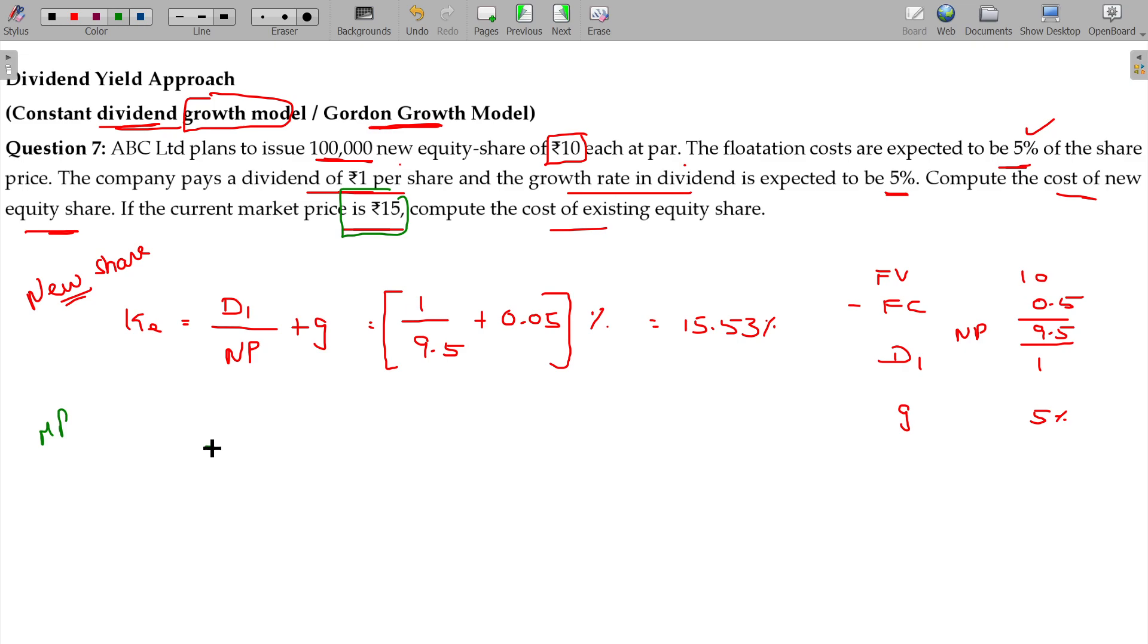Market price approach. That means D1 being ₹1, market price being ₹15, plus growth being 0.05.